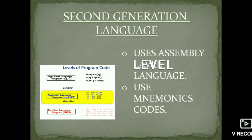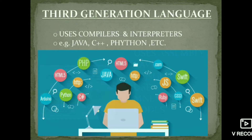Second generation language uses assembly-level language and mnemonic codes. The high-level code you write is compiled and changed to assembly-level language using compilers or interpreters, and that assembly language is then converted to binary code which is understood by the computer.